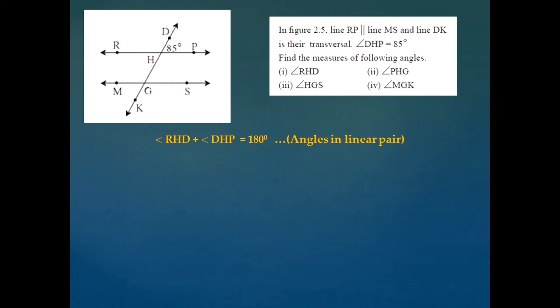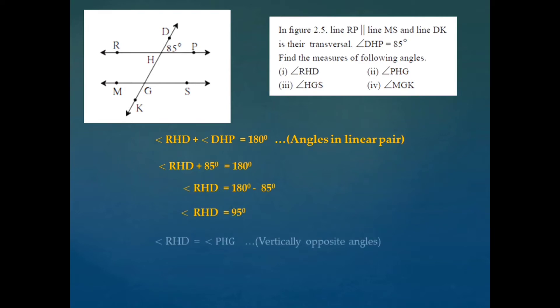We start with angle RHD plus angle DHP, which is equal to 180 degrees, because these two are angles in a linear pair, so the sum of their measures must be 180 degrees. Measure of angle DHP is 85, so transferring to the right hand side, angle RHD is equal to 180 minus 85, that is angle RHD is equal to 95 degrees.